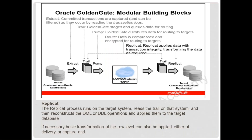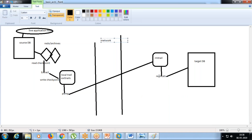Now the replicate part. In GoldenGate, what I have seen is that the major issues or failures happen at the replicate end only, because extract has very rare issues. The replicate is just a process - it is just reading from the trail file sent by the pump and overwriting to the target.